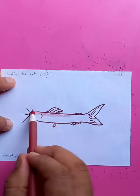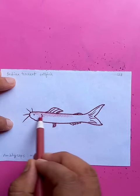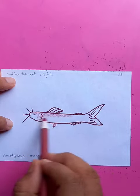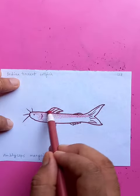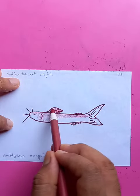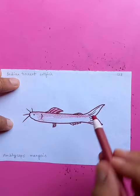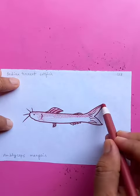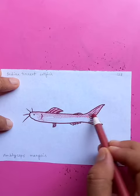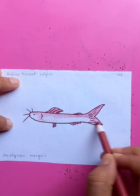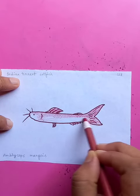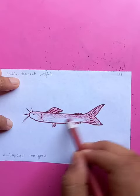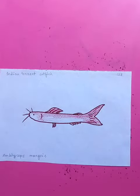A little bit darker on the top side and on the dorsal fin. Also the tail — making it a darker color there. The drawing's nice, thank you so much.